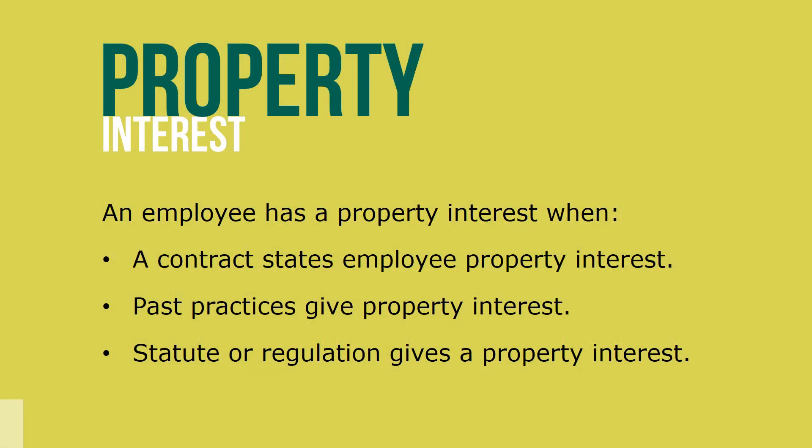First, we need to understand property interest in employment. An employee has a property interest when a written or implied contract states that the employee has a property interest — most commonly found in a just cause discipline or due process clause of a labor agreement. Second, the employer's past practice gives the employee a property interest; that is, the employer has been giving its employees notice and hearing in past practice. And finally, there's a statute or regulation that gives the employee a property interest.